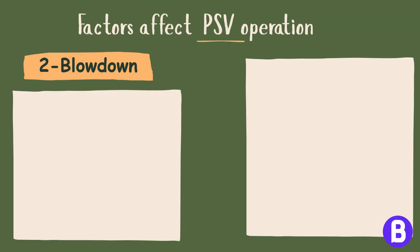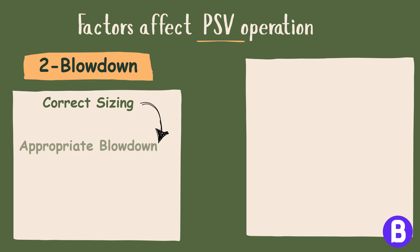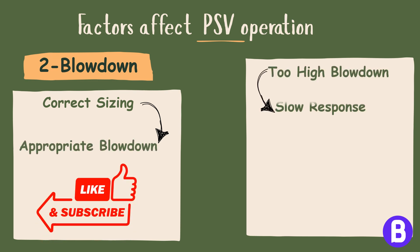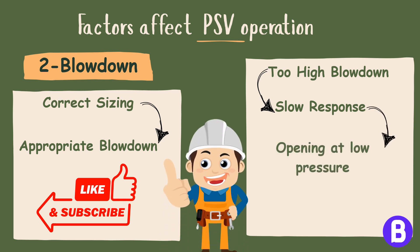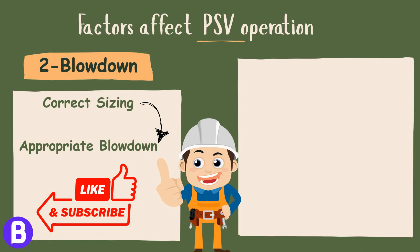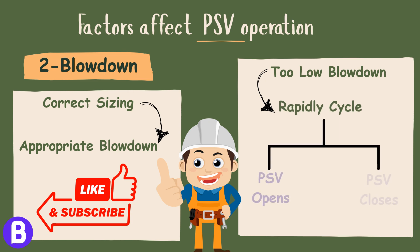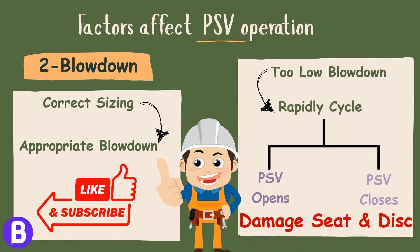It is essential to correctly size the pressure safety valve to have an appropriate blowdown. Too high a blowdown can cause slow PSV response and PSV opening at a pressure much less than set pressure, which can cause lots of disturbance. On the other hand, too low a blowdown shall lead the PSV to rapidly cycle between relieving and non-relieving states, leading to damage in the PSV seat and disc.